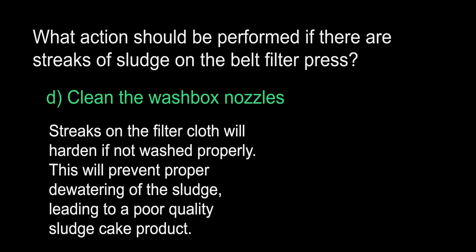The answer is D, clean the wash box nozzles. Every belt filter press is equipped with nozzles that continually spray water onto the filter cloth. On a belt filter press, these nozzles are located after sludge cake has been removed but before more sludge is applied. This keeps residual sludge and polymer from sticking to the filter cloth. If improper washing of the filter cloth occurs, streaks will appear and then dry, which will make the cloth less porous, allowing less water to be removed from the sludge. This leads to a sludge cake product with a lower percentage of solids.